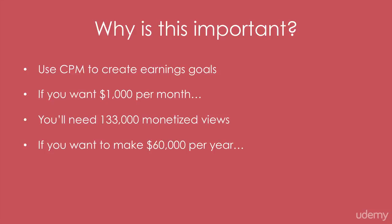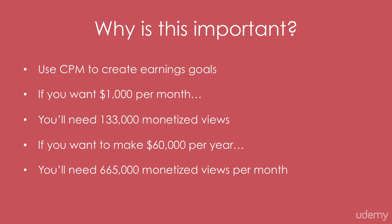Say you want to make $60,000 per year as a full-time YouTuber. You're going to need 665,000 monetized views per month — that's per month, not per year — to make $60,000 per year. That would be $5,000 U.S. dollars per month, totaling a yearly salary of $60,000.